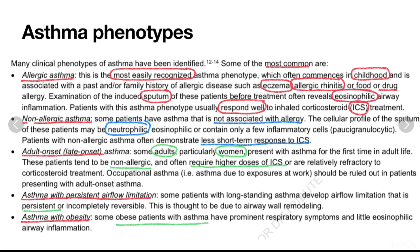Then comes adult-onset or late-onset asthma. Some adults, particularly females, develop asthma for the first time in adult life. These patients tend to be non-allergic and often require higher doses of ICS and are relatively refractory to corticosteroid treatment. We should also distinguish adult-onset asthma from occupational asthma, which is usually due to exposure at work.